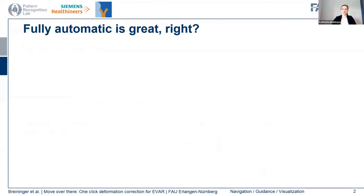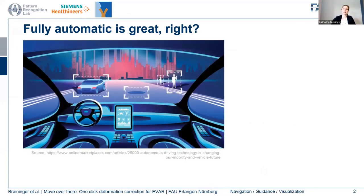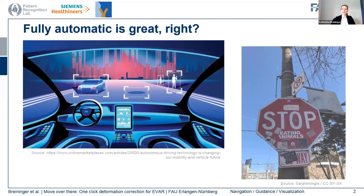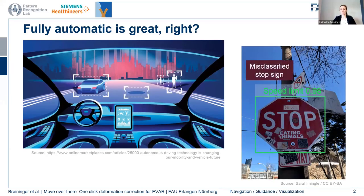At BVM, we often strive for fully automatic solutions to simplify certain tasks and to improve outcomes. One example not directly related to medical imaging is automated driving, where safety is of similar concern. In practice, we often see cases where our automatic approaches don't work as expected and where we see failure cases — for example, in the case of a misclassified stop sign. Until we get our algorithms to work perfectly, we need some way to deal with these failure cases and to develop approaches where we can easily complement these shortcomings by user knowledge.